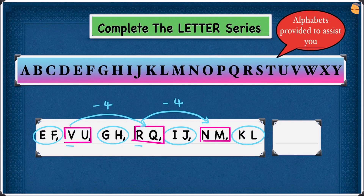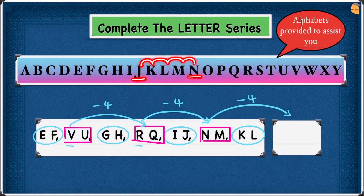From N we have to do minus 4 to get the answer. So minus 4 from N: N is here — 1, 2, 3, 4 — if we do minus 4 we land at J. So J is going to be the first part of our answer. Write J.